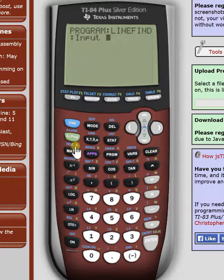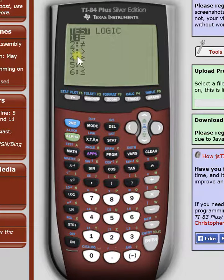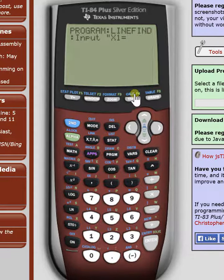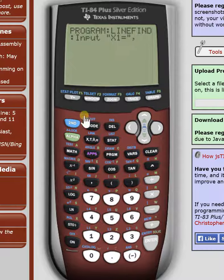So we're going to hit input, and we're going to hit quotations. Type in x1, second math is going to give you your equals sign, equals, alpha plus, ends the quotations, comma, and then we have to name it a letter. So we'll just name it a for simplicity reasons.